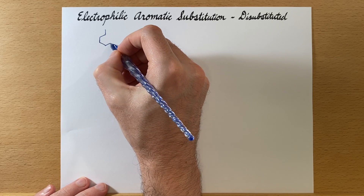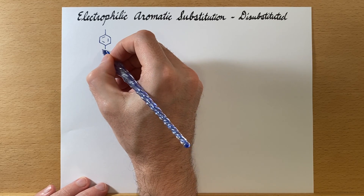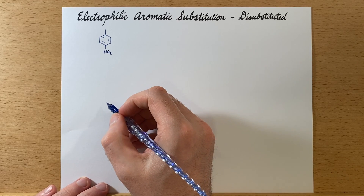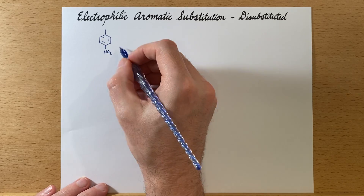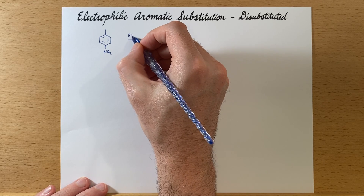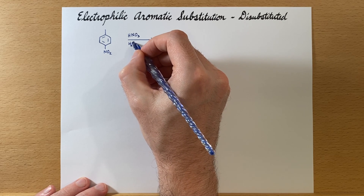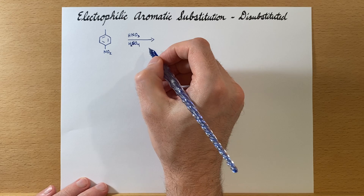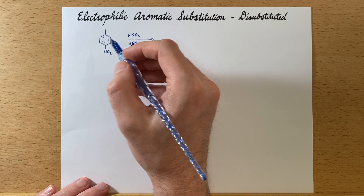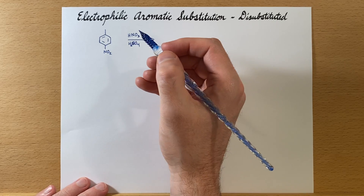So let's go back to one of these that we could have made: para-nitrotoluene. Now in this case, if we have this and we're going to nitrate this again, since we've already looked at that reaction, we'll need sulfuric acid in here simply because this is a deactivated ring, and we'll have to push that reaction forward. Now let's look at what these directing groups are doing.